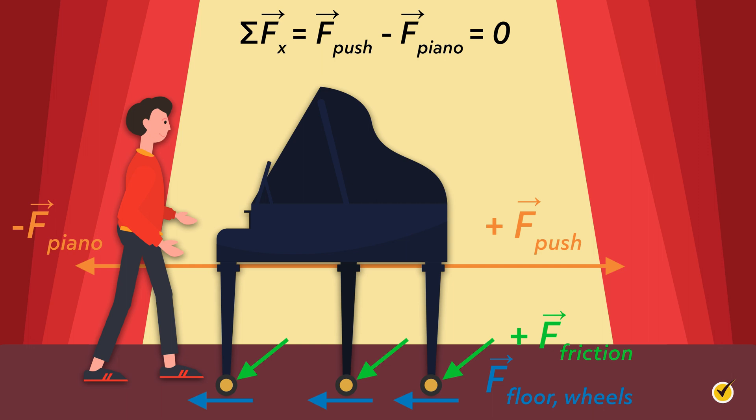Since the piano has a constant speed of zero and no direction, we can state Newton's first law as the sum of the forces is equal to the push force minus the force of the piano. This implies that the positive push force is equal to the negative pull force from the piano.